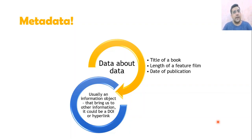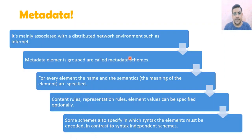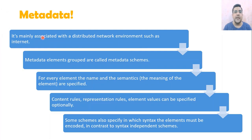The next concept is metadata. Metadata is data about data. It could be a single element like the title of a book, length of a feature, or date of publication. An information object that brings us to other information — like a DOI or hyperlink — is also metadata. Metadata is mainly associated with distributed network environments such as the internet, intranet, or local networking.